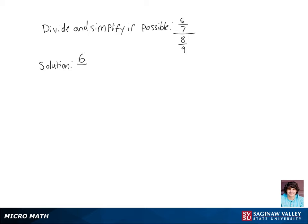Let's divide and simplify 6 7ths divided by 8 9ths. When we're dividing by a fraction, that's the same as multiplying by the reciprocal. The reciprocal of 8 9ths is 9 8ths, so we're going to multiply 6 7ths by 9 8ths.